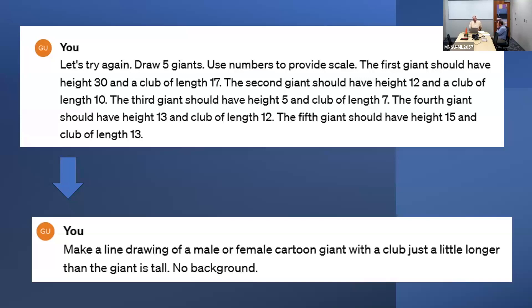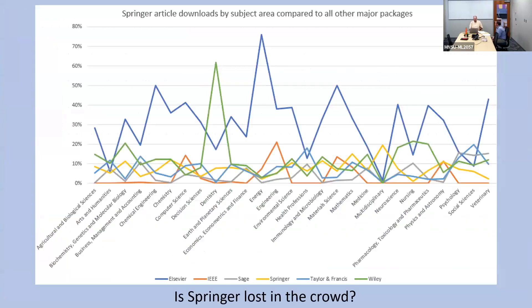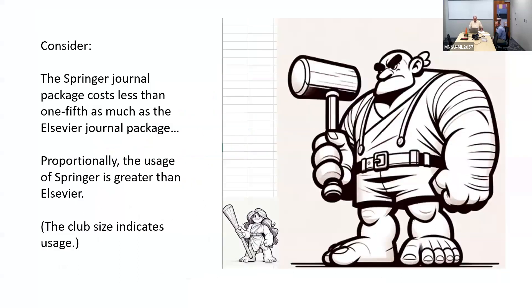So let's imagine we're in a meeting. In this imaginary meeting, I'm presenting on the value provided by our Springer journal package. I get to the slide where I show the usage provided by all of our most expensive journal packages. Springer usage is depicted by the yellow line. I ask: is Springer lost in the crowd? I follow this with a novelty visualization depicting the overall cost and usage of the Springer package relative to Elsevier. The size of the giant equates to the cost, while the club size equates to usage, showing usage relative to cost.